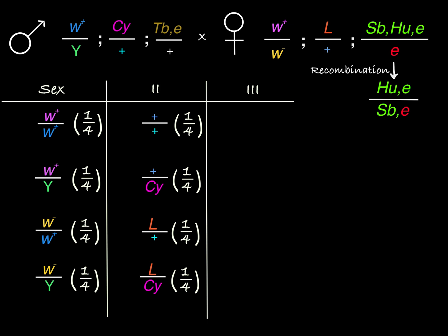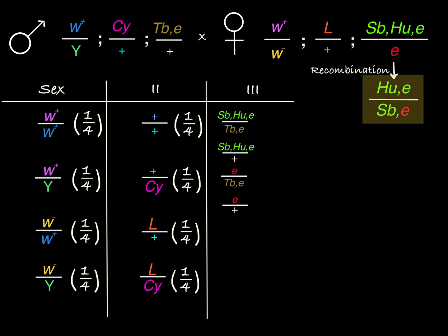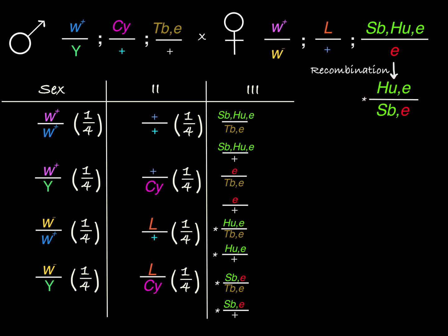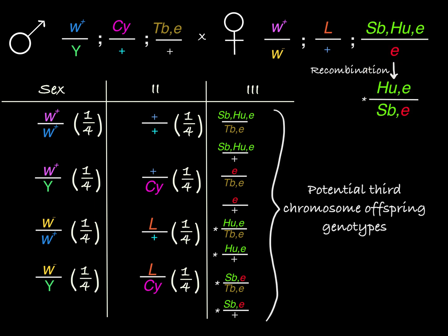Now for the third chromosome, we start by pairing our non-recombinants as normal. This female chromosome can pair with the male TBE or the male wild type chromosome, and the other female chromosome can pair with the male TBE or the male wild type. We also have to consider the potential recombinant female chromosomes in the gamete. So we pair each recombinant female chromosome with the male TBE or the male wild type. I like to note which are the recombinant offspring genotypes with a star, just to remind myself where they came from. This gives us all potential third chromosome offspring genotypes — recombination sure does increase genotype diversity in the offspring.